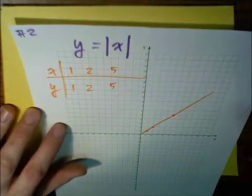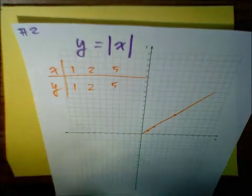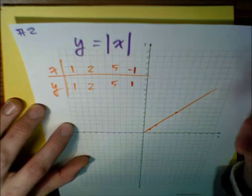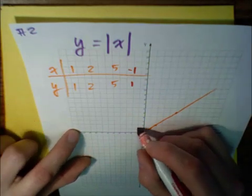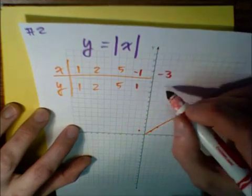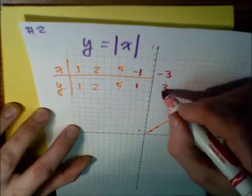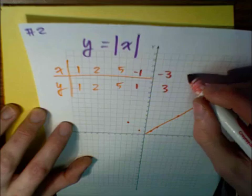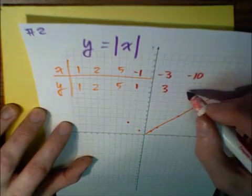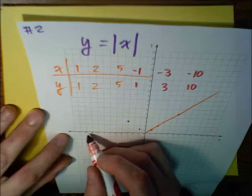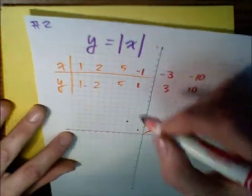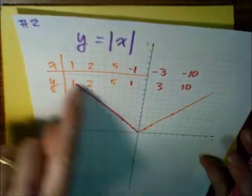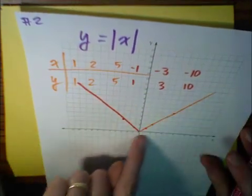But what if we start putting in negative values for x? If I put in negative 1, the absolute value of negative 1 is just 1. So that's the point (−1, 1). If I put in negative 3, the absolute value of negative 3 is going to be 3 — the point (−3, 3). If I put in negative 10, the y value is going to be 10 — here's negative 10, here's 10. And I hope you see that we're going to have a perfect 45-degree angle here and a 45-degree angle here.